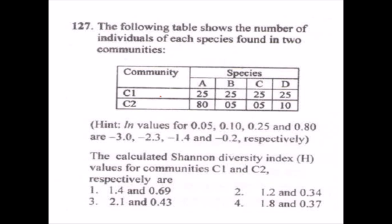Now let's look at how to solve questions related to the Shannon index. I have taken questions from the CSIR JRF NET. To calculate the Shannon index, we first calculate the total number of species. Community C1 and community C2 are given here, with species A, B, C, and D. The number of individuals per species in C1 are 25, 25, 25, and 25, and 80, 5, 5, and 10 for C2. The total for C1 is 100 and for C2 is also 100.